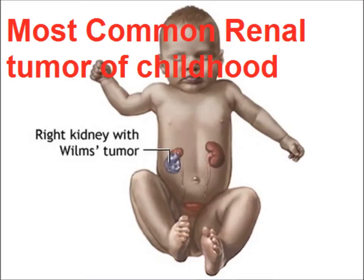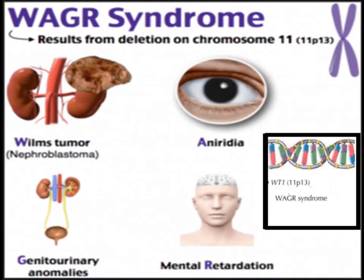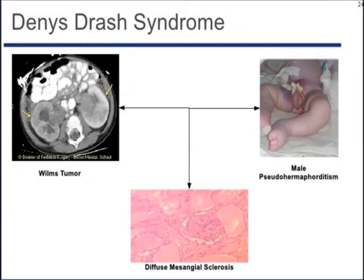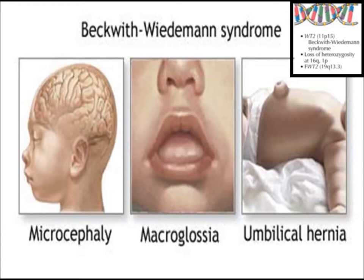Wilms tumor is usually associated with other congenital abnormalities. In WAGR syndrome, there is Wilms tumor, aniridia, and mental retardation, with mutation in the WT1 gene. Another associated condition is Denys-Drash syndrome, in which there is Wilms tumor, male genital abnormalities, and diffuse mesangial sclerosis — also associated with WT1 gene mutation.